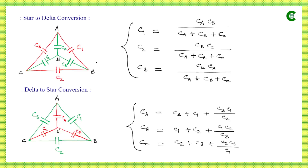This is the case for resistors. Now we will see what the formulae will be when we have capacitors in star and delta connections. In case of capacitors, the set of formulae for star-delta conversion is just opposite to that of resistors.